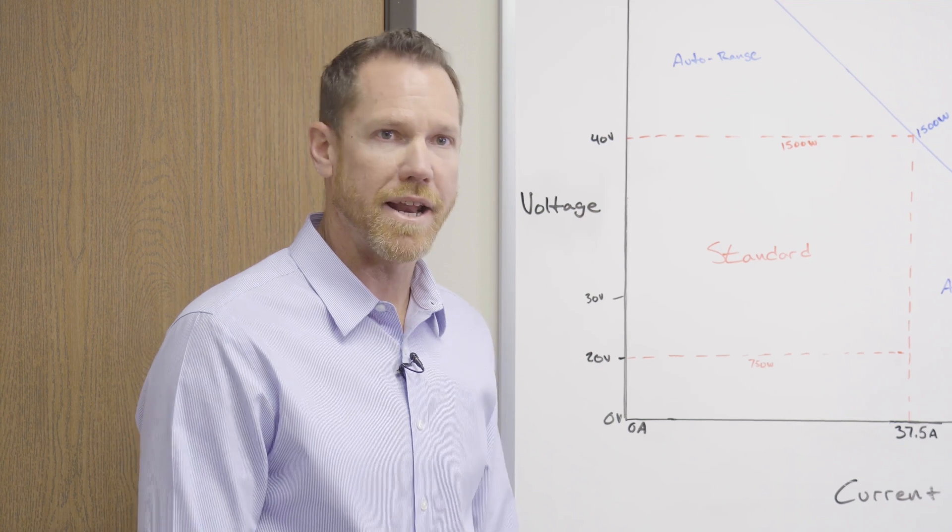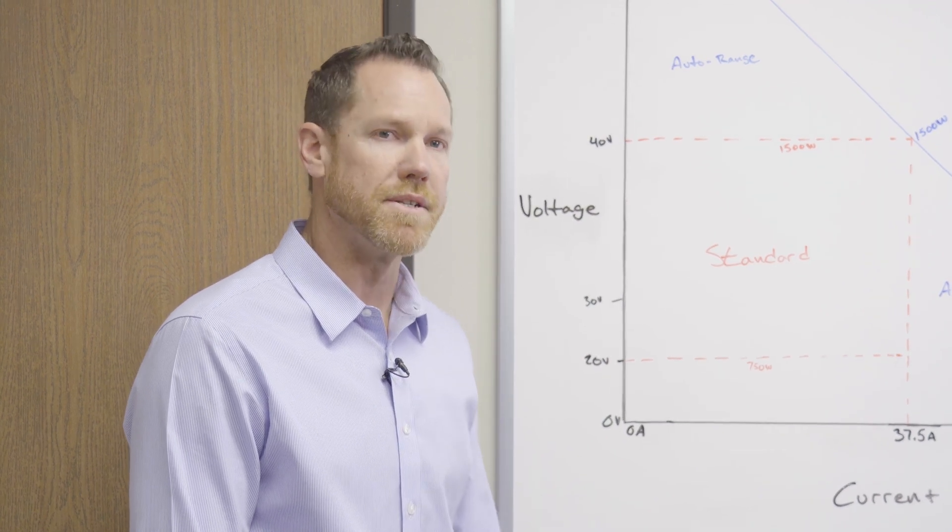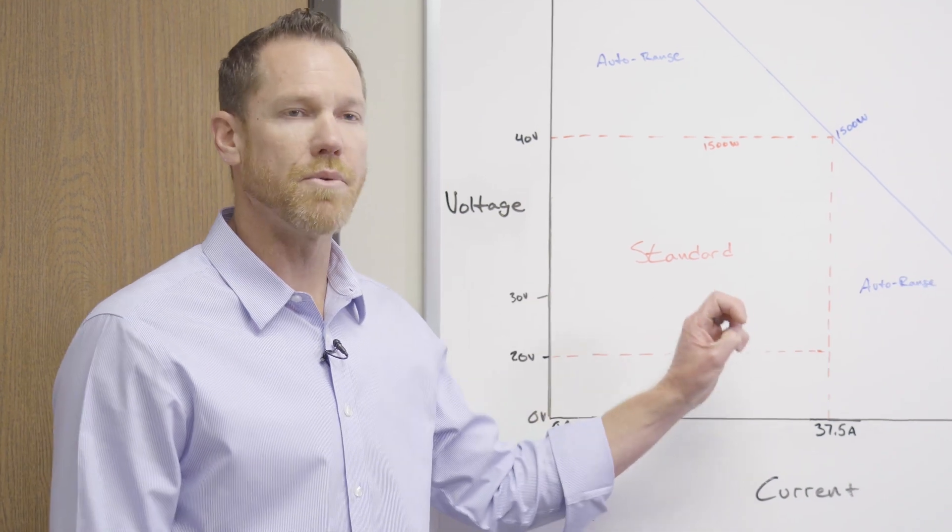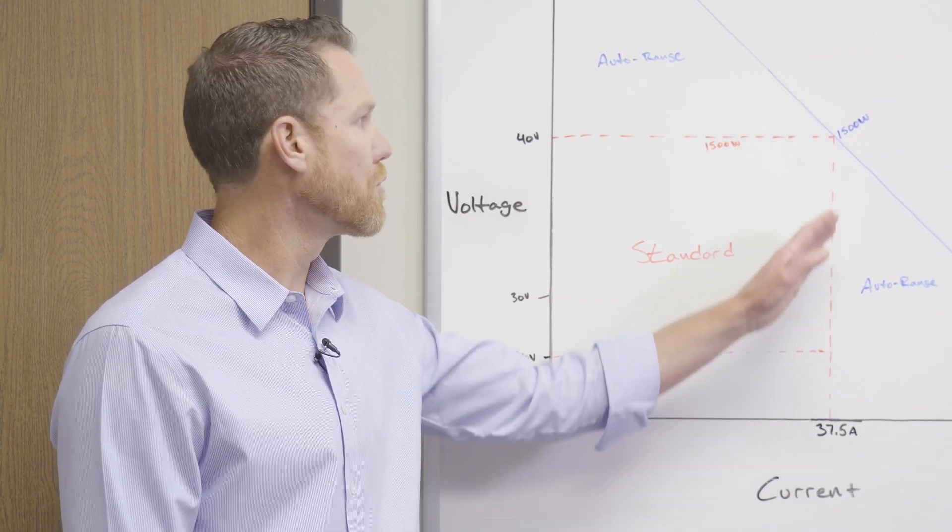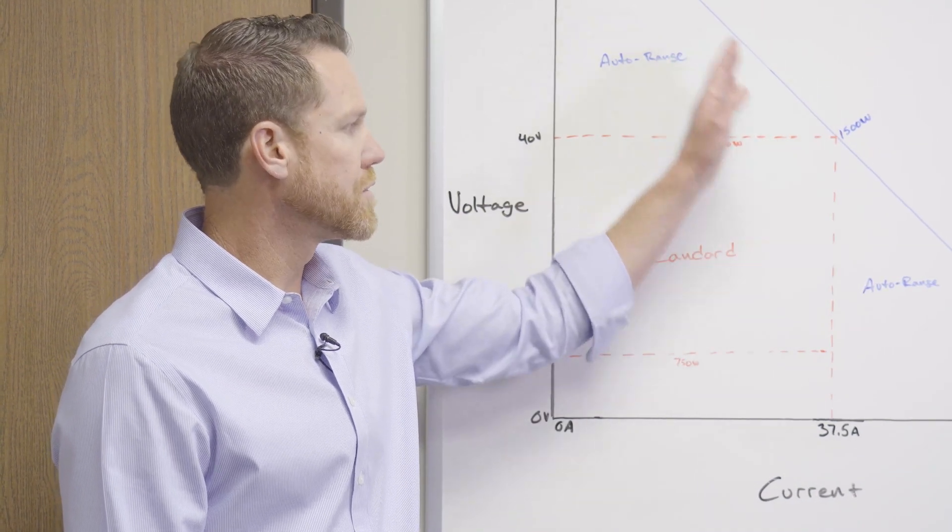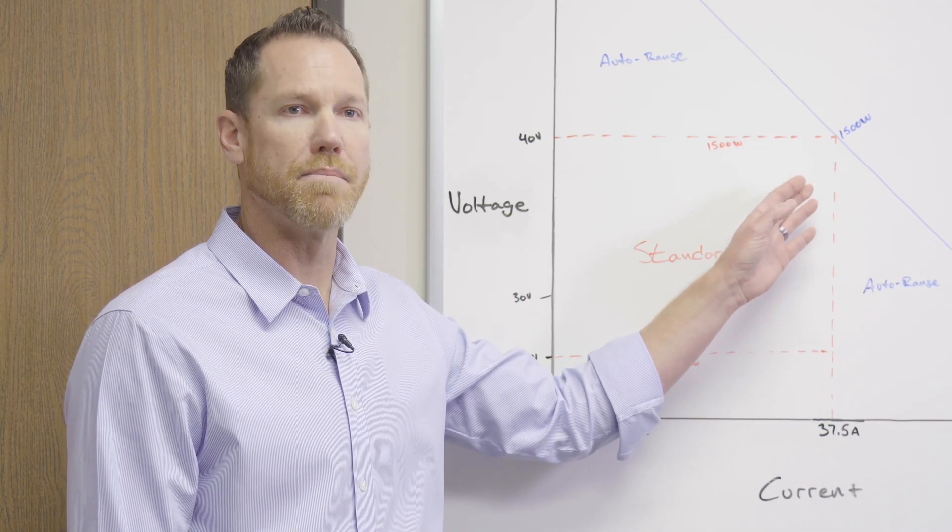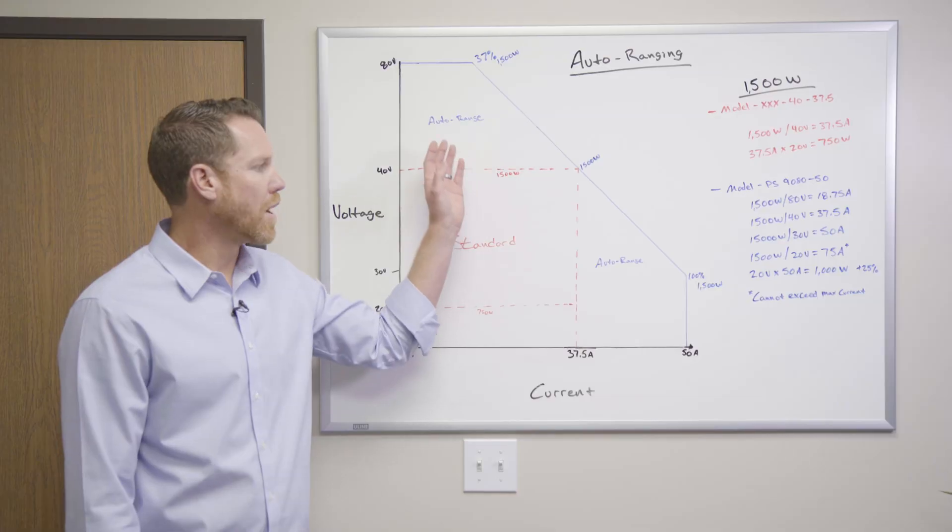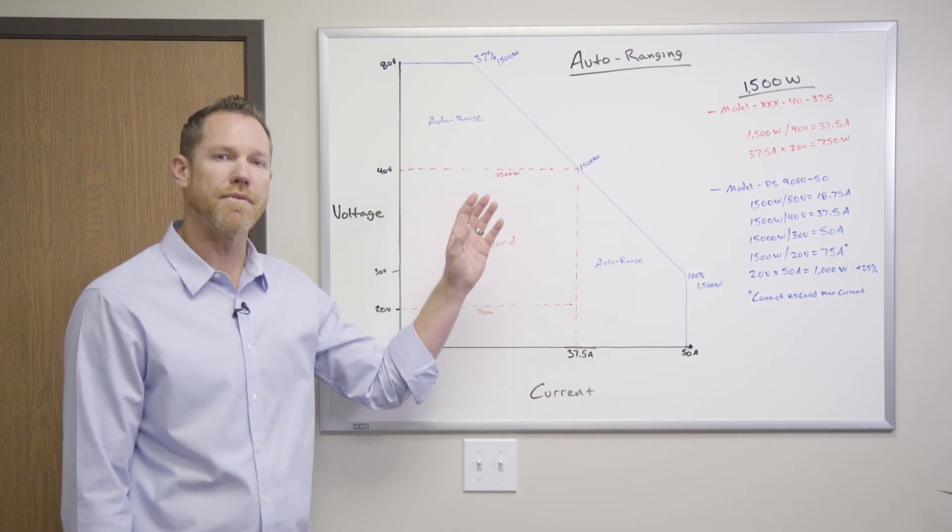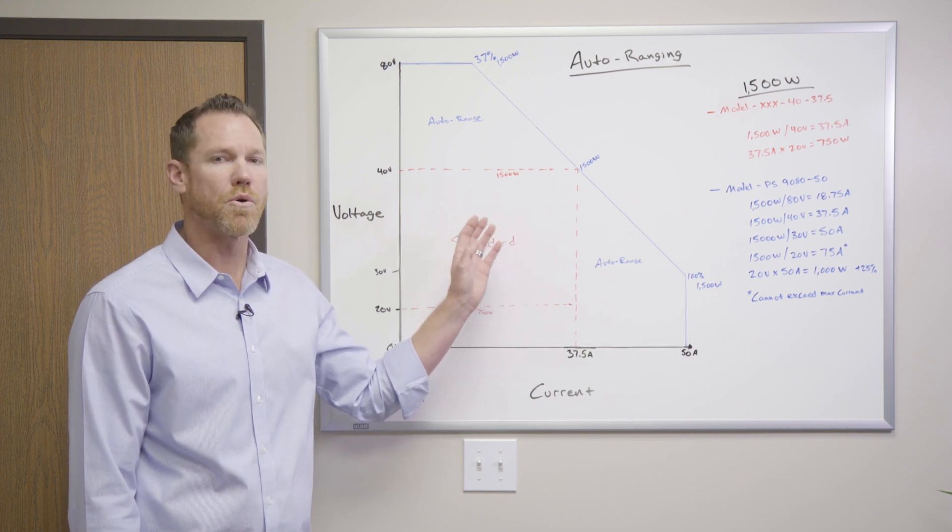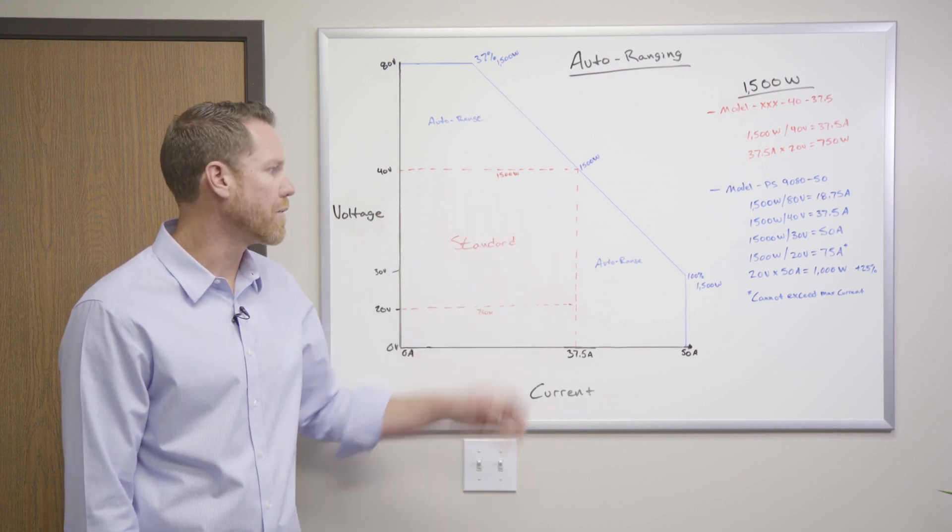Now, EA Electroautomatics power supplies work a little bit differently. This feature is called auto-ranging. What auto-ranging will actually do is as you program either up in voltage or down in voltage, the current that is available from the output of the power supply will actually increase or decrease as a function of the program voltage to maintain constant power across a wide operating range.